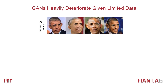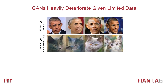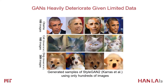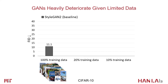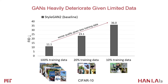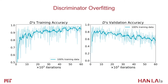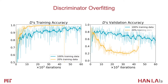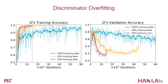Given 100 training images of Obama portraits, 160 cats, or 389 dogs, the state-of-the-art model StyleGAN-2 generates poor results as shown in this figure. Quantitatively, the FID of StyleGAN-2 degrades by more than two times giving 20% of training data on CIFAR-10, and even more than three times giving 10% of training data. This is mainly because the discriminator is memorizing the exact training set. Given 20% of the CIFAR-10 data, the discriminator's training accuracy saturates quickly, while its validation accuracy keeps decreasing before collapse. This overfitting phenomenon becomes more severe with 10% of data available.